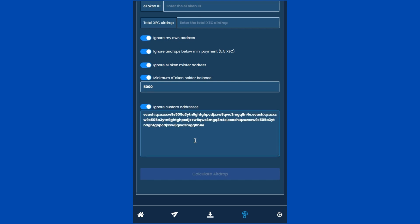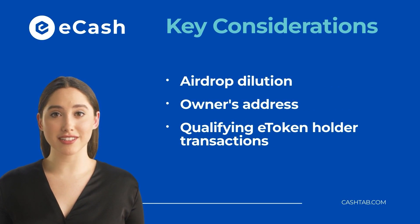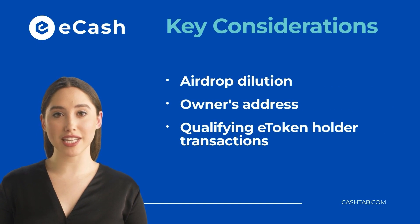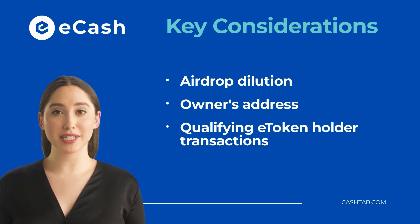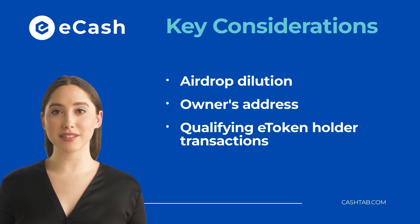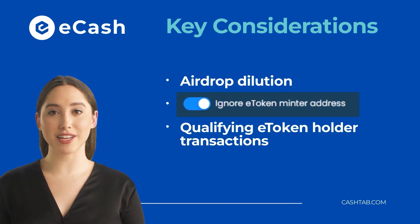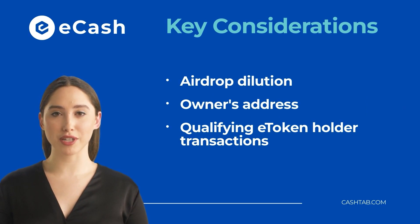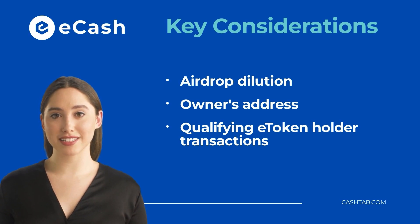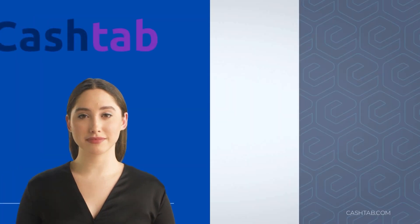There are a few key considerations to keep in mind with airdrops. First is the dilution of the airdrop amount — the more holders you have, the lower each individual airdrop will be, since the XEC airdrop is spread across more holders, so you may need to adjust the total airdrop amount for it to be considered worthwhile for each holder. Secondly, if you as the e-token owner are holding a significant portion of the total supply, the majority of the airdrop will go to your address, so you may want to use the 'Ignore e-Token Minter Address' option. Lastly, please ensure the qualifying e-token transactions to airdrop recipients have at least one confirmation, as the airdrop calculator will not detect unconfirmed token balances — if you just sent the e-token to someone, make sure that transaction has at least one confirmation, otherwise that recipient will not be counted.